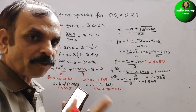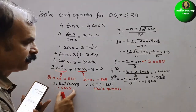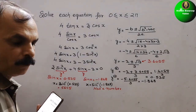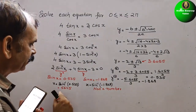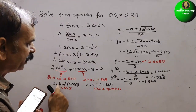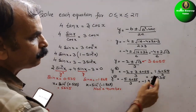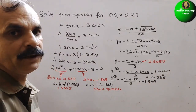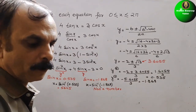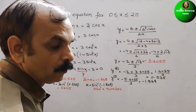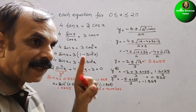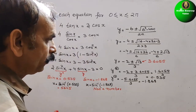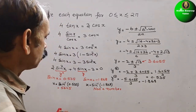So therefore we will take only the first value. Now, if you see, sine is positive here. If sine is positive, we have to go for the first and second quadrant.